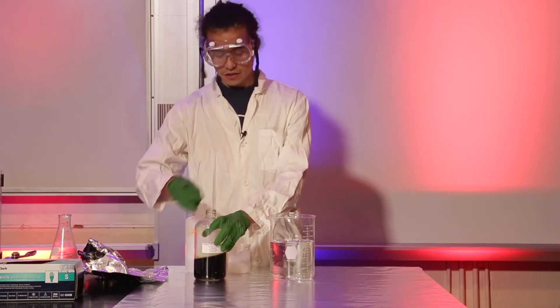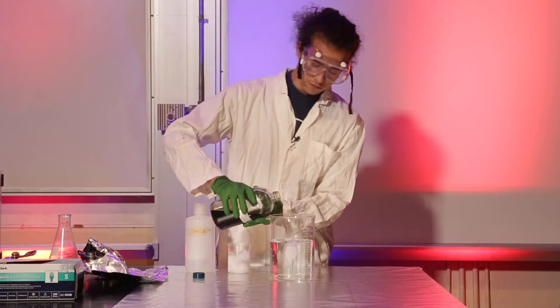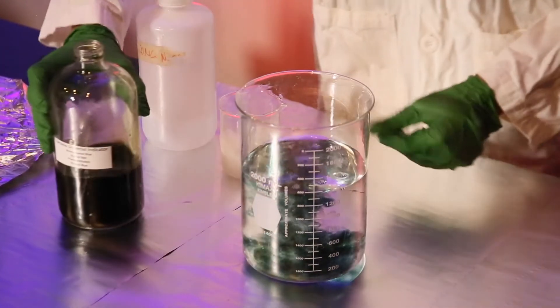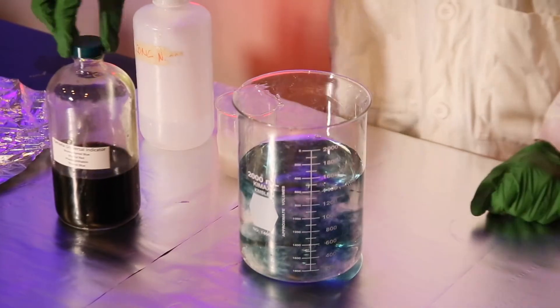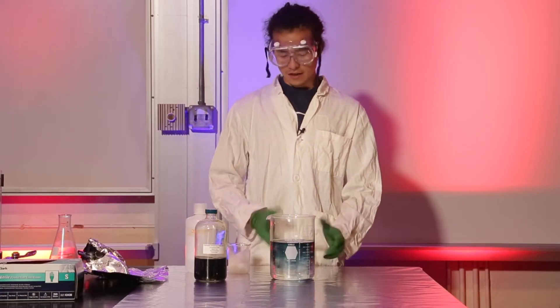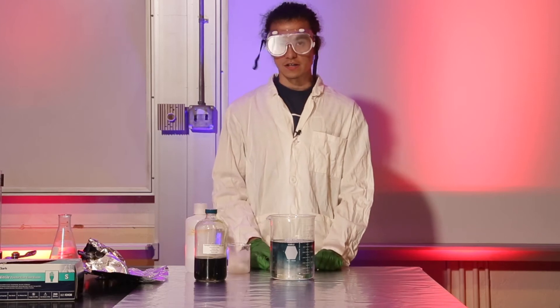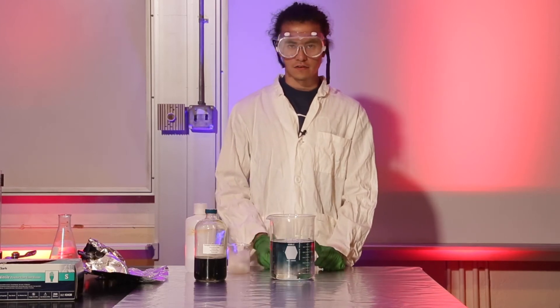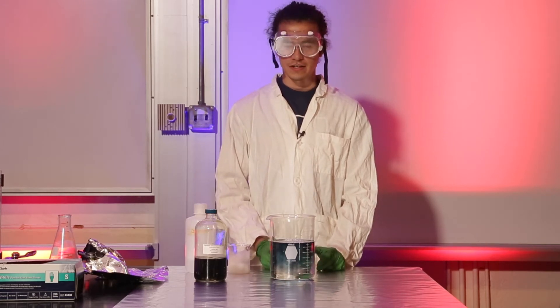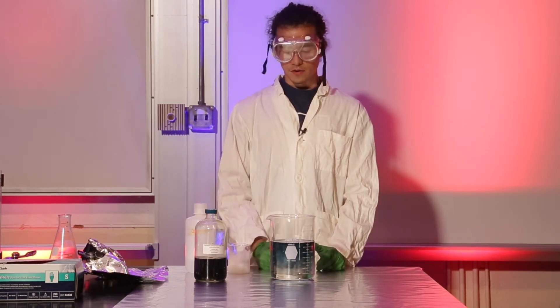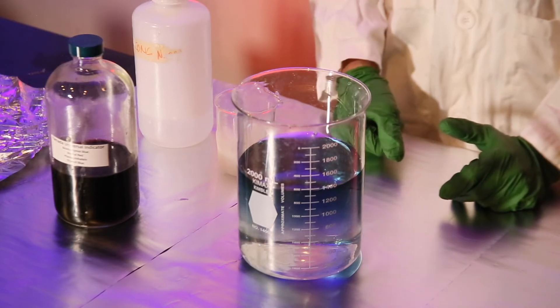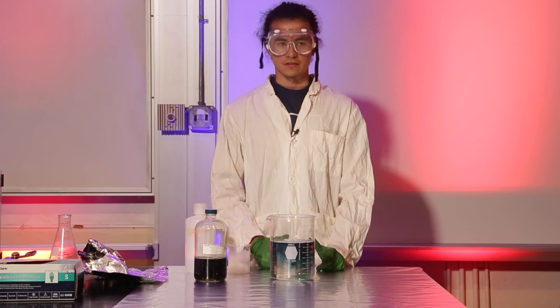So pH is just a measure of acidity. In this case with this indicator, the more yellow it is, the more acidic it is, so think like lemons, very acidic. And the more blue or purple, the more basic, so think like soap.